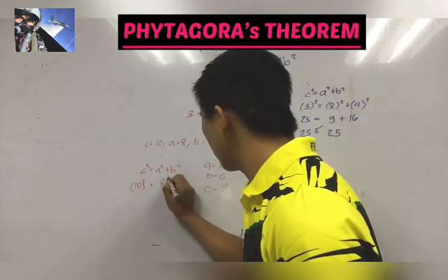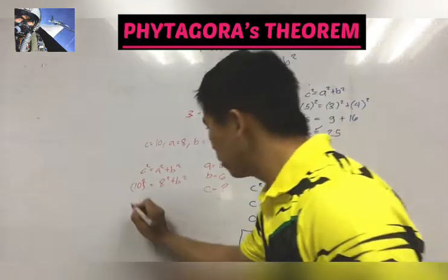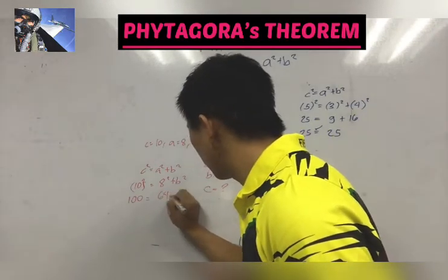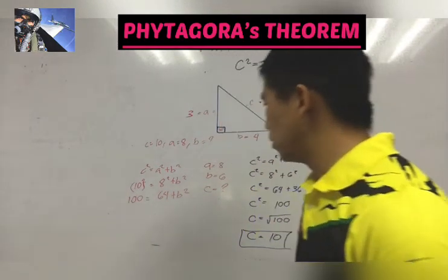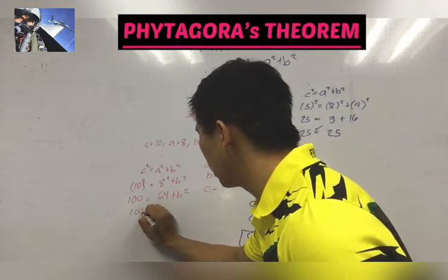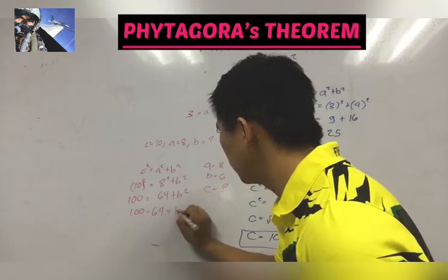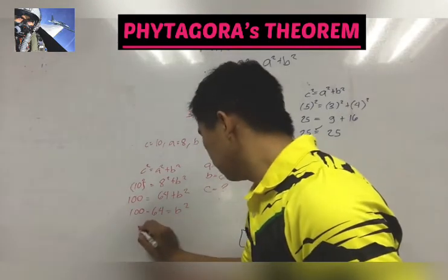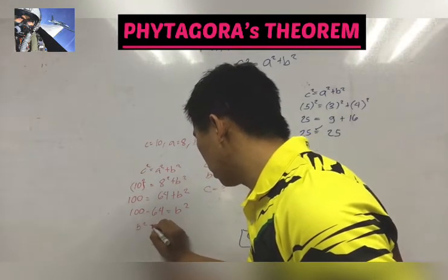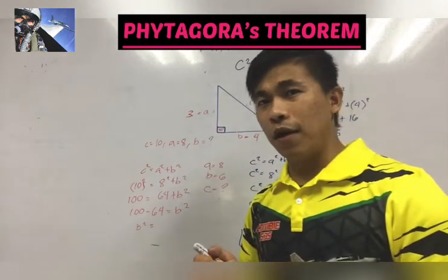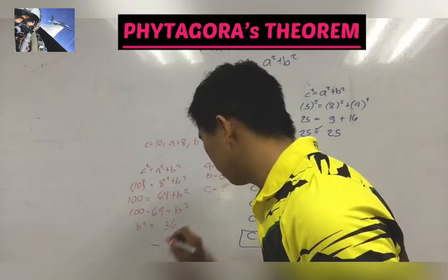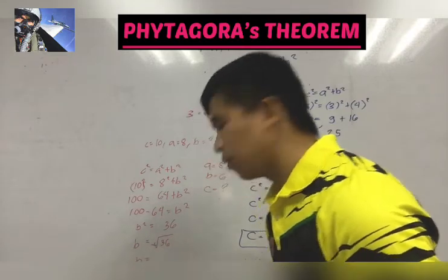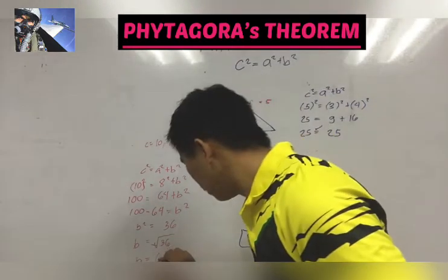So 10² = 8² + B². So we have 100 is equal to the square of 8, which is 64, plus the unknown B.